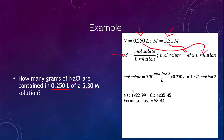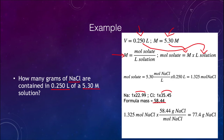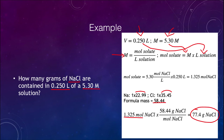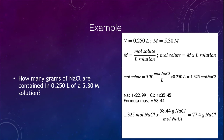We look up the formula mass: sodium has a specific atomic mass and so does chlorine. When we add them together, we get the formula mass for sodium chloride. We then convert the moles to grams: 1.325 moles multiplied by the formula mass gives us 77.4 grams of sodium chloride. So when looking for grams, we need to calculate the formula mass or molar mass to convert moles into grams.